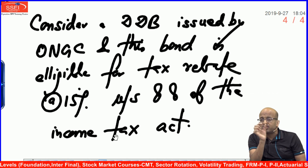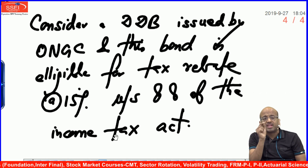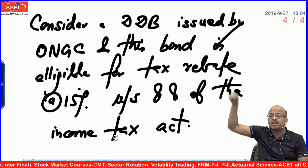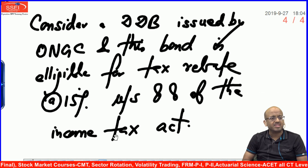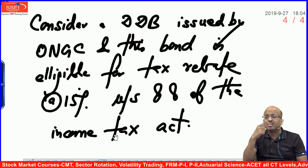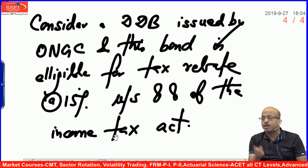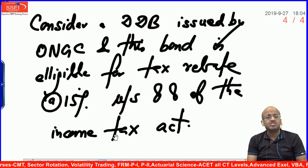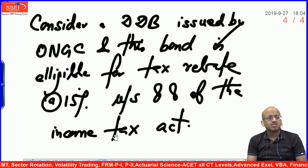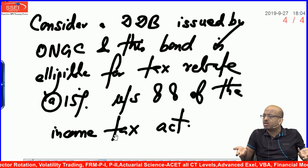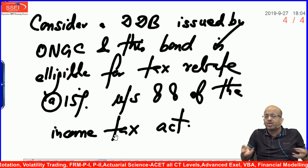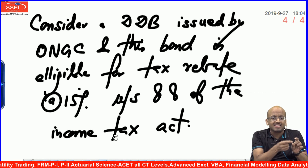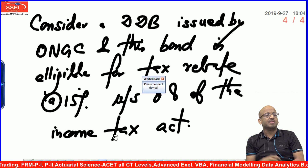You understand rebate? It means whatever you invest in the bond, 15% of that shall be a tax rebate — income tax savings. So your initial outflow will be the price of the bond minus 15%. My outflow will be the price minus the 15%.